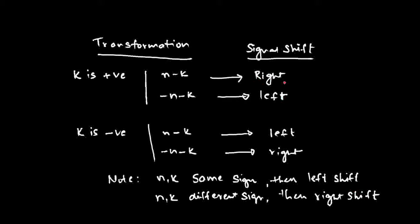Here, n and k have the same sign — you see minus n and minus k — so shift to the left. And when k is negative, it actually becomes positive, making n and k have the same sign, so shift to the left. If they have different signs, shift to the right.